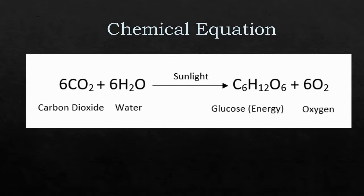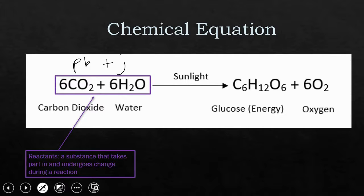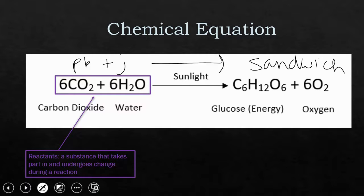Here's a common chemical equation — photosynthesis, which I think we learned in sixth grade. Plants use carbon dioxide and water to make energy, and it yields glucose and oxygen. Let's look at this equation and talk about some significant parts. These are the reactants — substances that take part in the chemical reaction and undergo a change. Pretty much this would be my peanut butter and jelly, making a sandwich. So the reactants are the ingredients, and then my arrow means yields or equals.